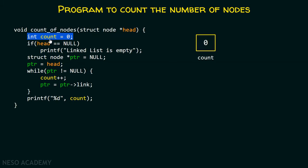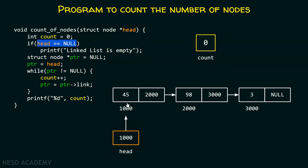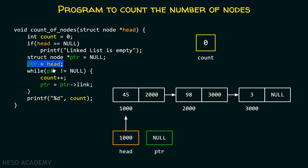Here, we are declaring this count variable which is initialized to zero. This variable is used to count the number of nodes in the list. After this, if head is equal to null, then we will print that the linked list is empty. Head is the pointer pointing to the first node of the list — if head contains null, it means it is not pointing to anything, and the linked list is empty. If this is not satisfied, head must contain the address of the first node of the list. So we create a pointer of type struct node, initialize it to null, then put the value of head inside ptr. Since head contains 1000, ptr will also contain 1000 and point to the first node. After that, we have a while loop which will run until ptr becomes null.